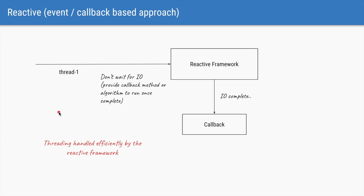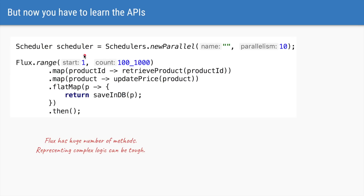In reactive programming, instead of waiting for an I/O operation to complete, we ask the reactive framework: here is the I/O operation — once you complete it, here's my algorithm or the next method I want to call. Thread one only submits that algorithm to the reactive framework, and the framework takes care of calling that method (also known as a callback) once the I/O operation is completed. All the threading is handled by the reactive framework itself, so you can efficiently use your CPU with only a limited number of threads to perform thousands of I/O operations.